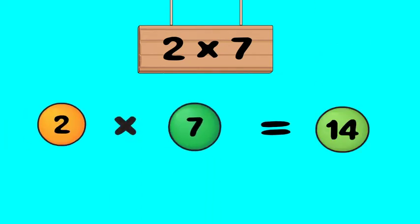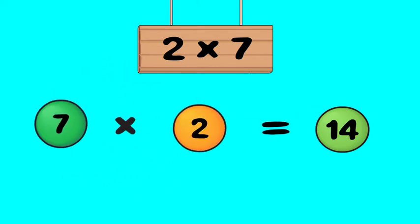Remember the commutative property: change the order of factors and the product doesn't change. So seven times two is fourteen.